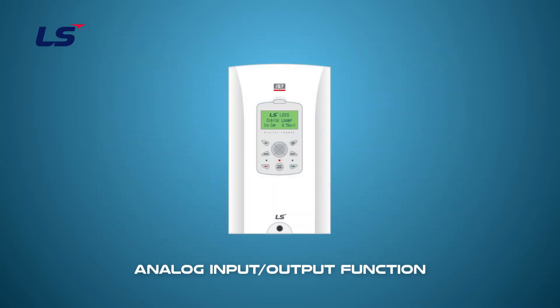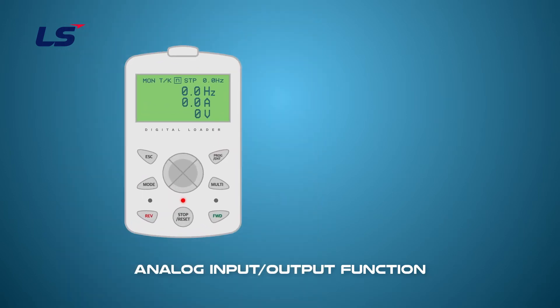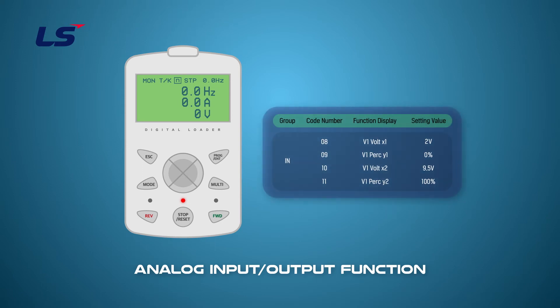Next, we will learn how to set analog input related parameters using the IS7 keypad. In this video, we'll set the drive to run 0 Hz at 2 volts, 60 Hz at 9.5 volts. First, press the mode key to enter parameter mode.